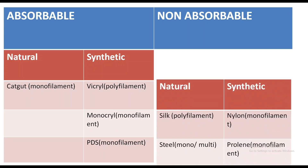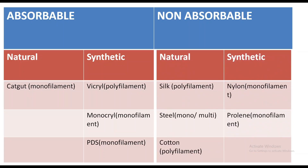PDS is a monofilament absorbable synthetic suture. Non-absorbable natural sutures include silk, which is polyfilament; steel, which may be monofilament or multifilament; and cotton, which is polyfilament. Non-absorbable synthetic sutures include nylon, which is monofilament, and prolene, which is also monofilament.